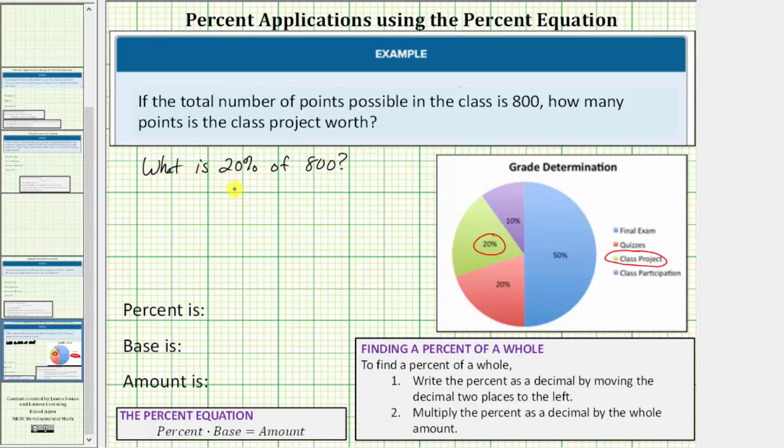So let's convert 20% to a decimal. Right now the decimal point is to the right of the zero. We'll go left two places, so one, two, which will give us .20 or just 0.2.